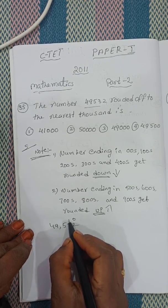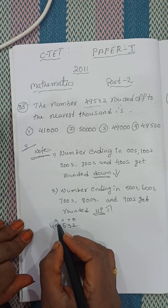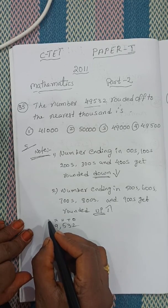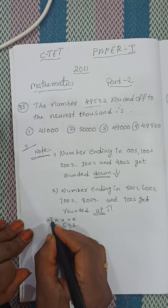Ones, tens, hundreds, thousands, ten thousands.